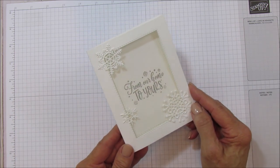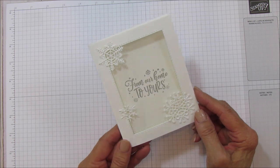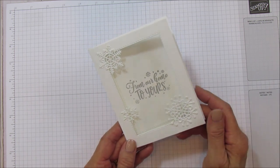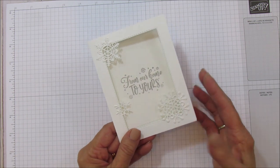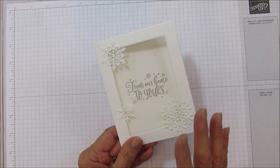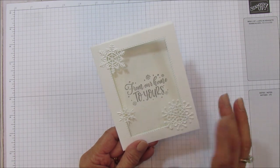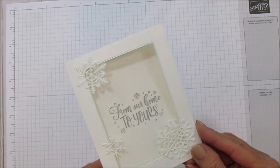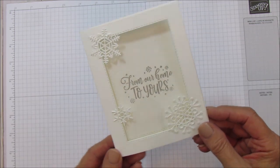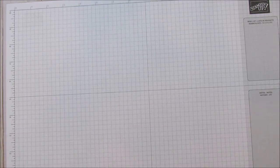I really like this one even though it's just simple and whisper white. For the sentiment I'm using smoky slate because I wanted it to be more subtle. I didn't want stark tuxedo black in there, so I wanted to go with a softer look.